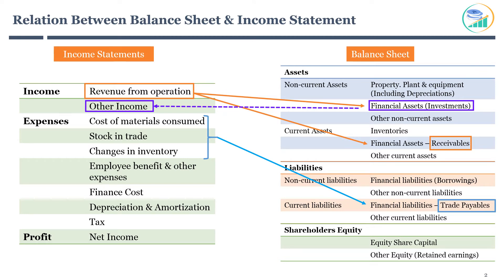Selling a product requires a business to carry an inventory of products. A company can sell a product manufactured in the current financial year, or sometimes it takes several years to complete the sale. Such unsold inventory of products is carried on the balance sheet as a current asset.